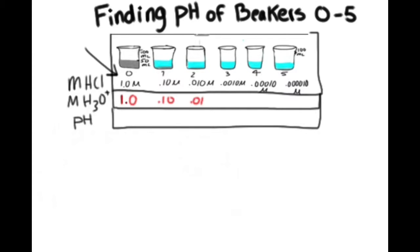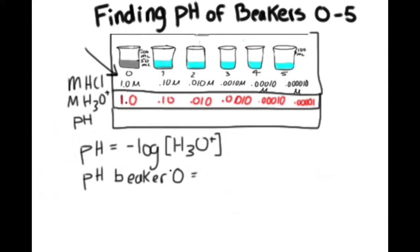From this, we can assume the hydronium concentrations of the other beakers are equal to the concentrations of hydrogen chloride for the respective beakers. Now to find pH. pH is the negative log of the concentration of hydronium ions, so pH for beaker zero would be negative log one, which is equal to zero.